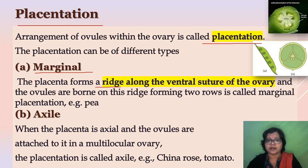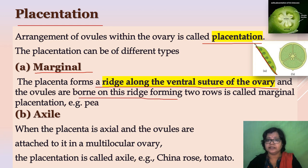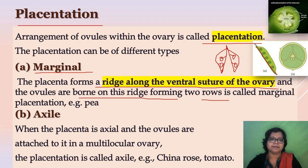The first type is marginal placentation. The placenta forms a ridge along the ventral suture of the ovary and the ovules are borne on this ridge, forming two rows, as we find in pea. In the diagram, we find that the placenta forms a ridge along the ventral suture and the ovules are arranged in two rows.